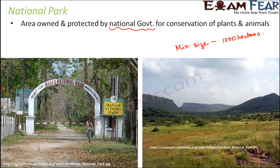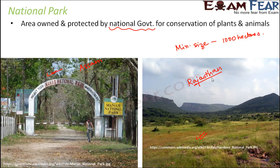Here on the screen you can see Manas National Park, which is in Assam. Here you can also see Ranthambore National Park, which is in Rajasthan. These parks have a lot of greenery because trees are not allowed to be cut down. They are a big area full of plants and animals that live freely in their own way, not in an artificial environment. They are safe because there is nobody to harm or kill them. That is how a national park is maintained.